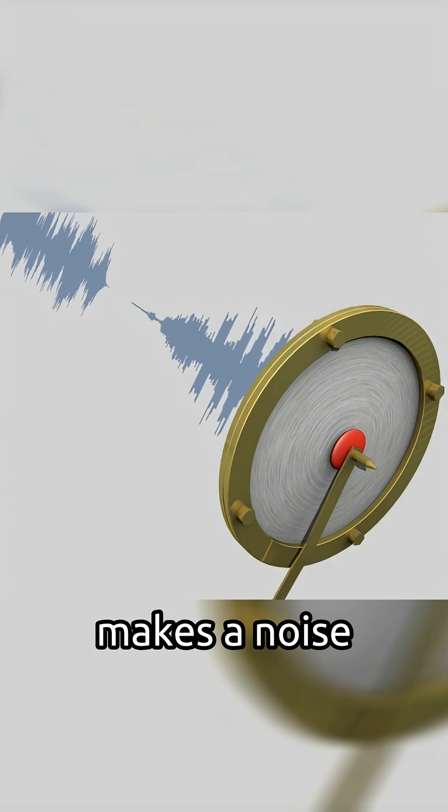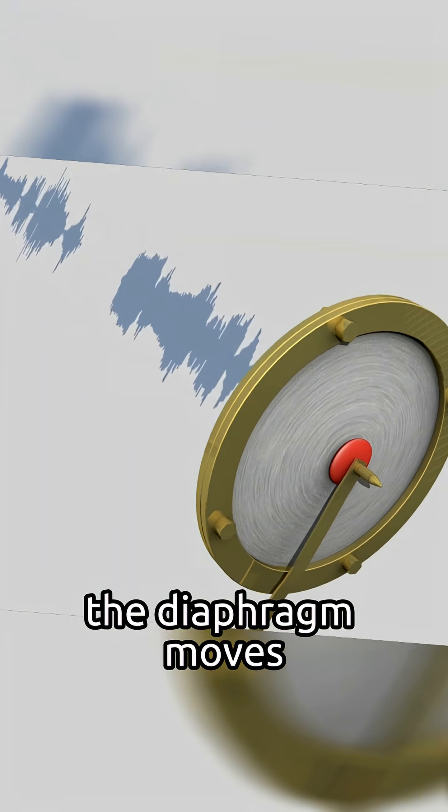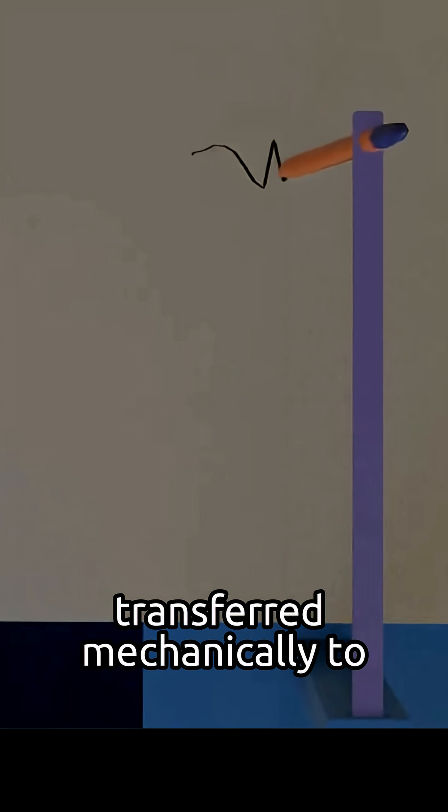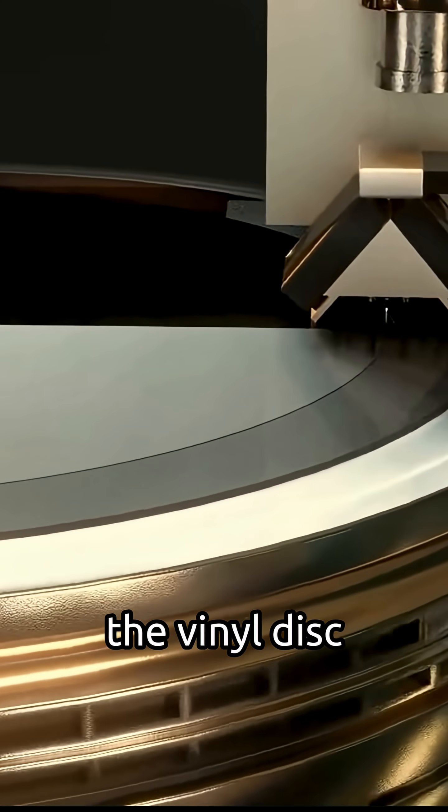When a singer or an instrument makes a noise, the air around them vibrates and creates sound waves. The diaphragm moves with these vibrations, which are then transferred mechanically to a needle. The vibrating needle then physically scratches the vinyl disc as it rotates,